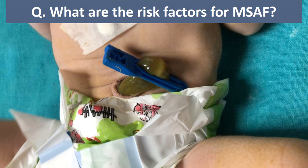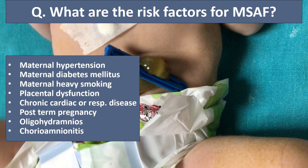What are the risk factors for meconium-stained amniotic fluid? There are maternal and fetal risk factors. Maternal risk factors include hypertension, diabetes mellitus, heavy smoking, placental dysfunction such as abruptio placenta and placenta previa, chronic cardiac or respiratory disease, post-term pregnancy, oligohydramnios, and chorioamnionitis — all of which increase the risk of meconium-stained amniotic fluid.